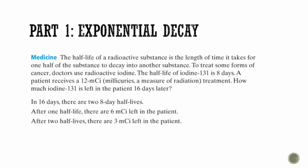So we're going to talk about half-life. So you've already talked about this in your science class. So let's apply it to math. The half-life of a radioactive substance is the length of time it takes for one half of the substance to decay into another substance. To treat some forms of cancer, doctors use radioactive iodine. The half-life of iodine-131 is 8 days. If a patient receives 12 millicuries of treatment, how much iodine is left in the patient after 16 days? So think about after 16 days, two half-lives have gone on. That means we're going to cut it in half twice. So if we start with 12, the first time we cut it in half, they have 6. And then the next time, they would have 3. So after two half-lives, there are 3 millicuries left in the patient.